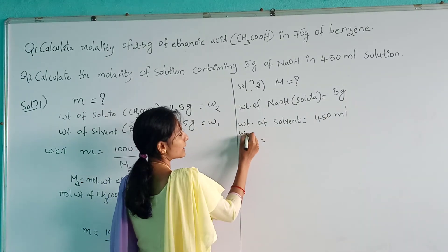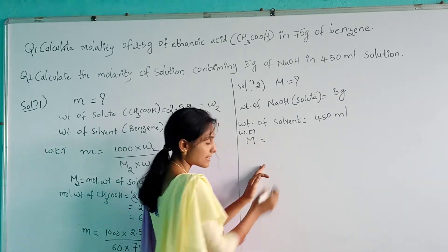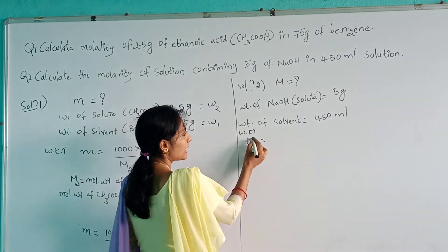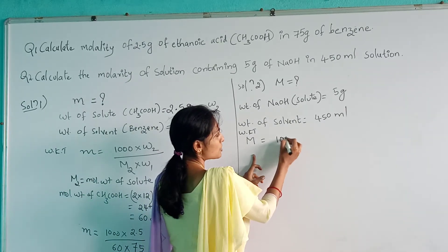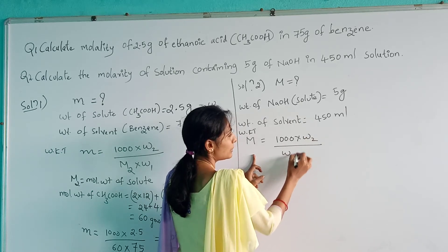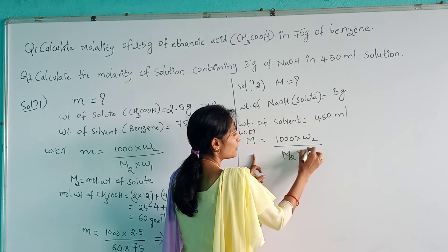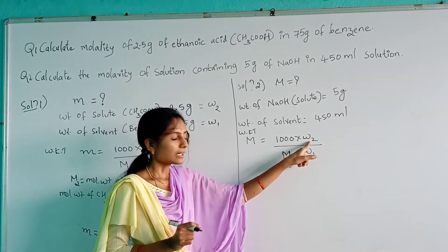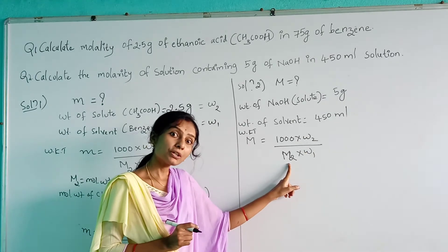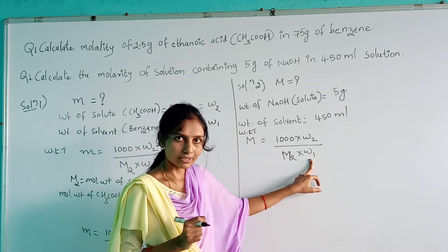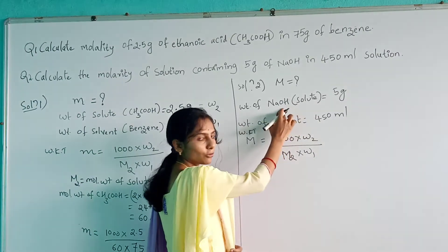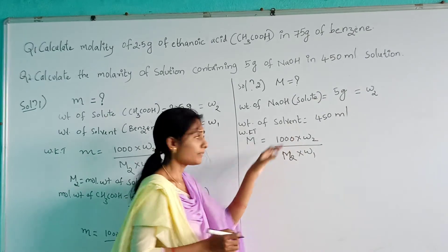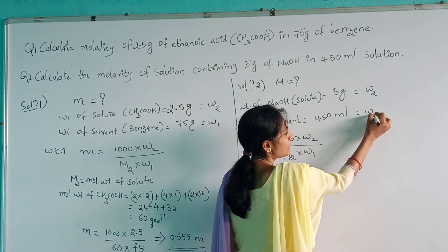Now, what is the formula? Molarity is equal to the number of moles of solute present in 1 liter of solution. The formula is: M = 1000 × W₂ / (M₂ × W₁). Subscript 2 refers to solute and subscript 1 refers to solvent. W₂ is the weight of solute — NaOH, so W₂ = 5 g. M₂ is the molecular weight of solute. W₁ is the weight of solvent, which is 450 mL.